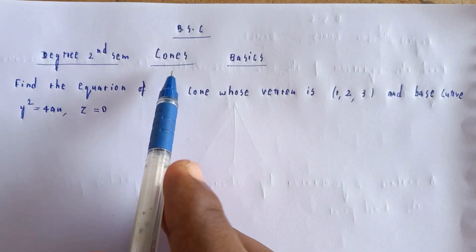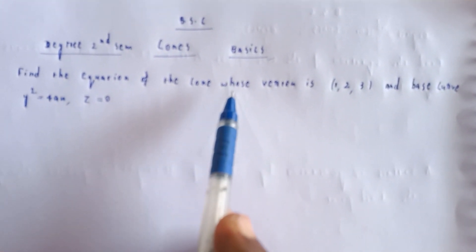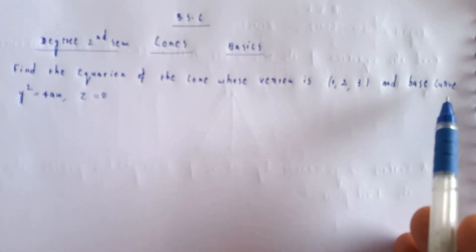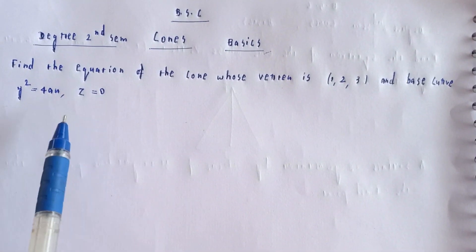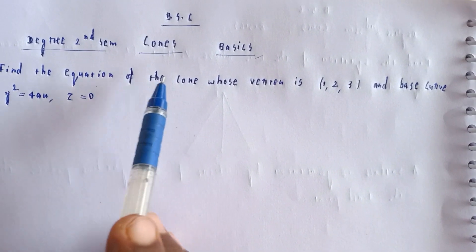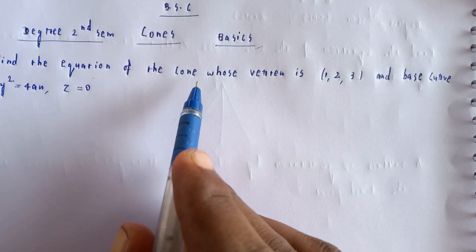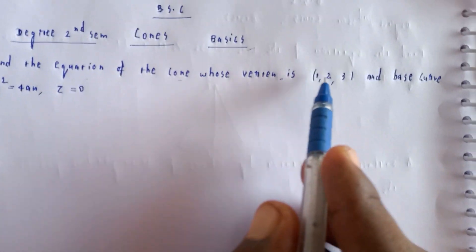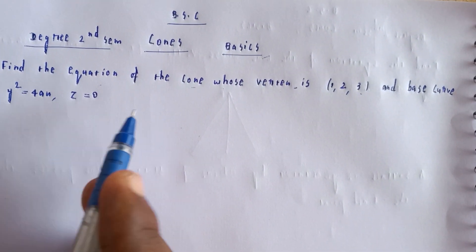Welcome to my channel. Today we will cover cone basics. Find the equation of the cone whose vertex is (1, 2, 3) and base curve y² = 4x, z = 0.